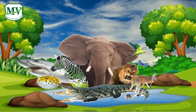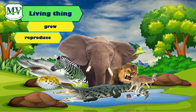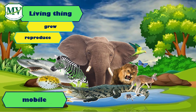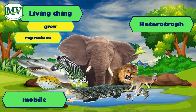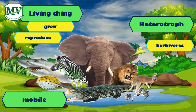Animals, like plants, are living beings. They can grow and reproduce. But they are mobile — they can move from one place to another. But unlike plants, they are heterotrophs. They cannot make their own food. There are three kinds of heterotrophs.